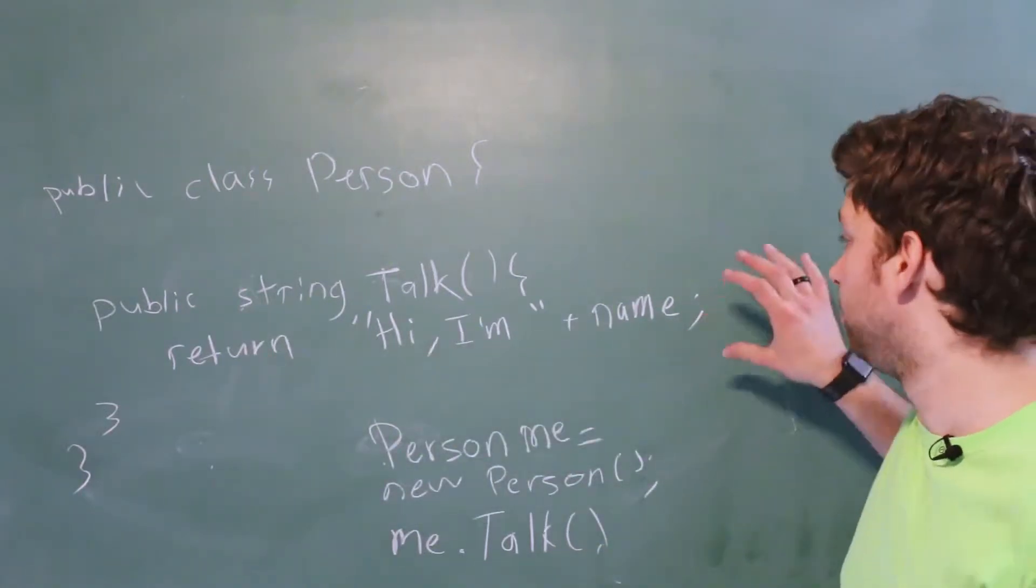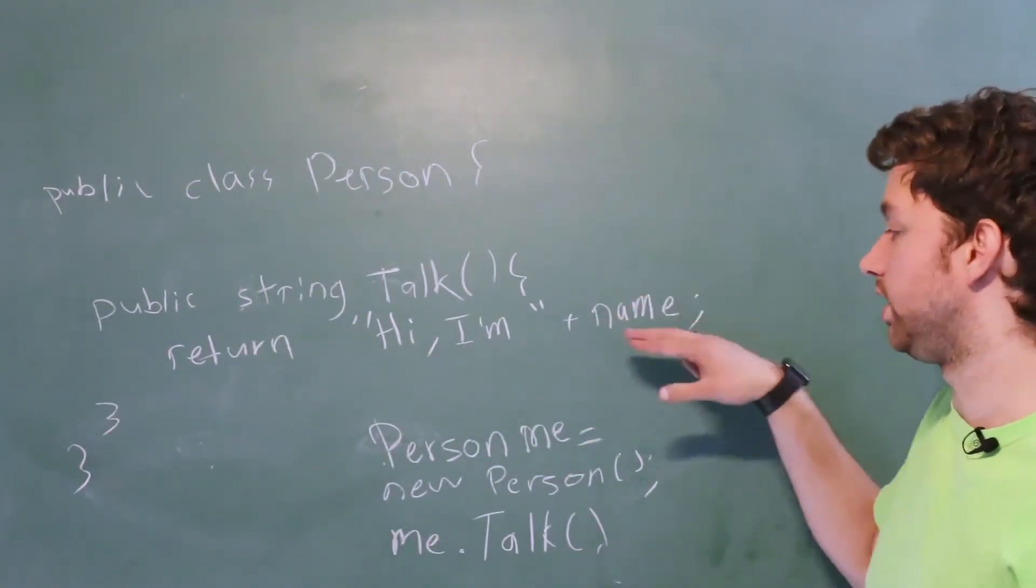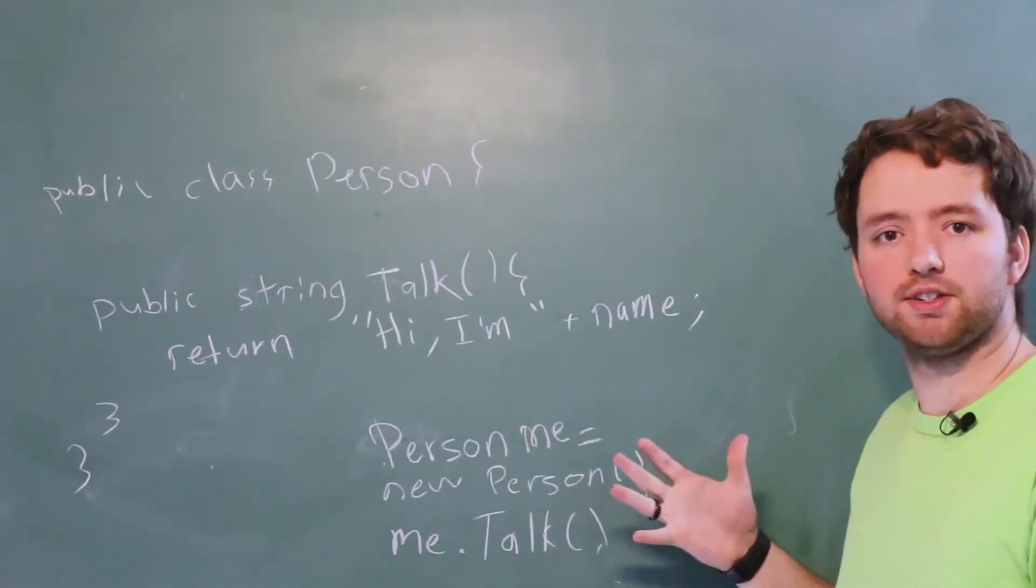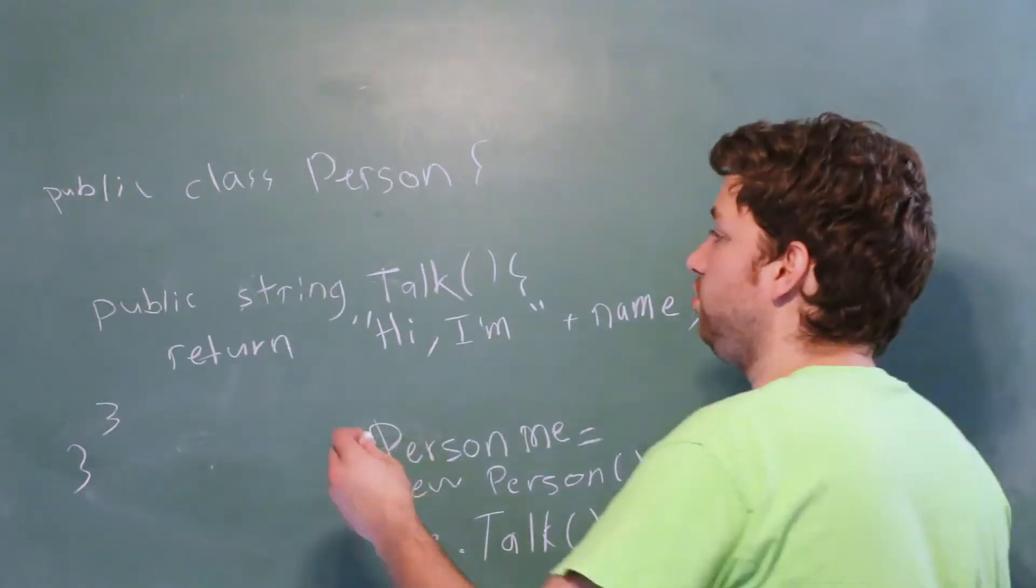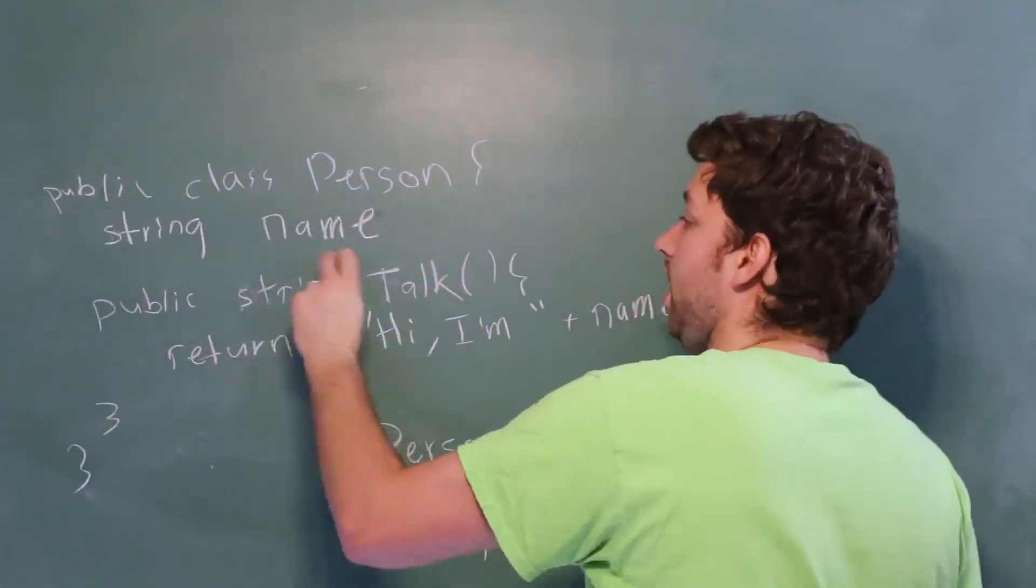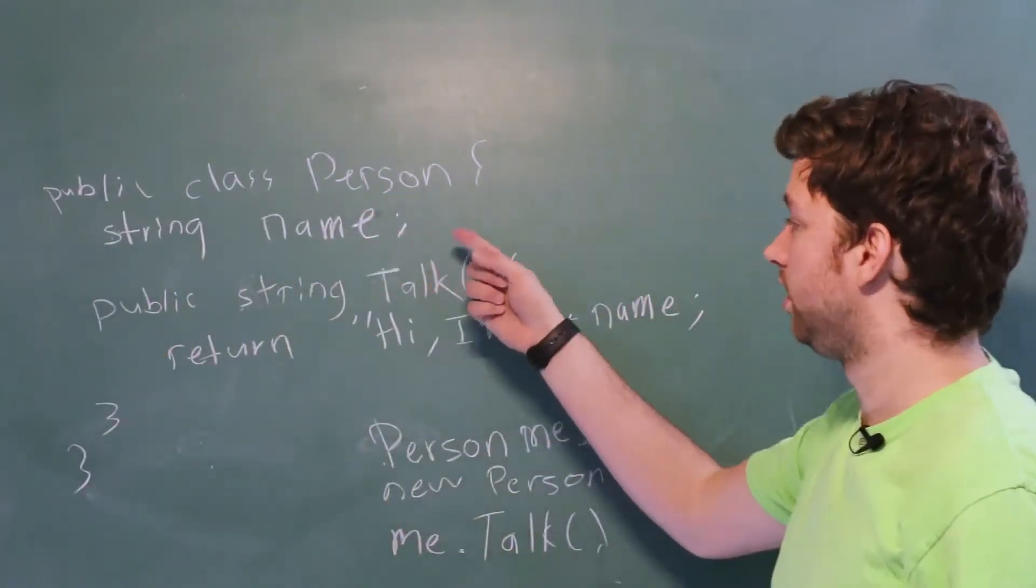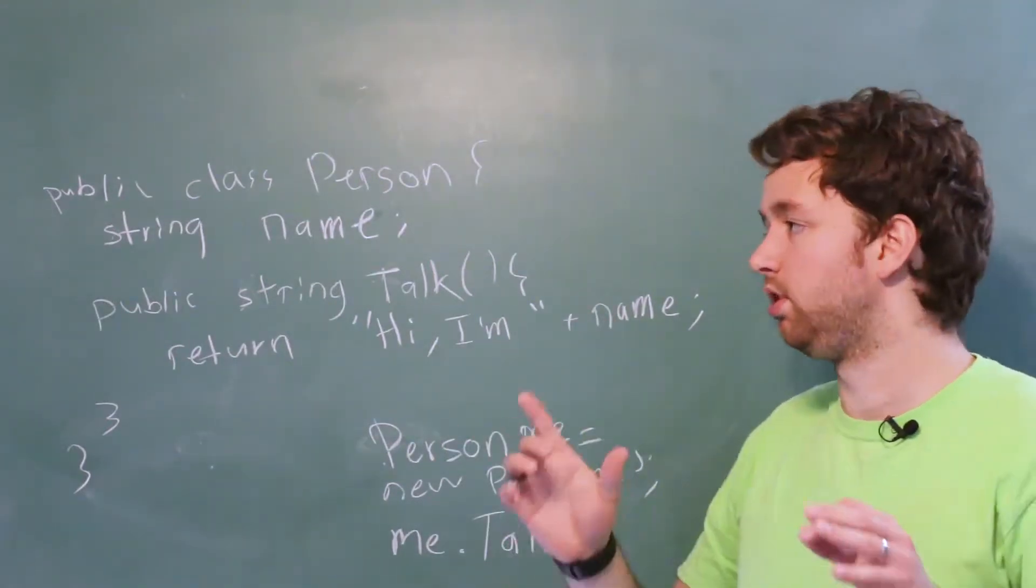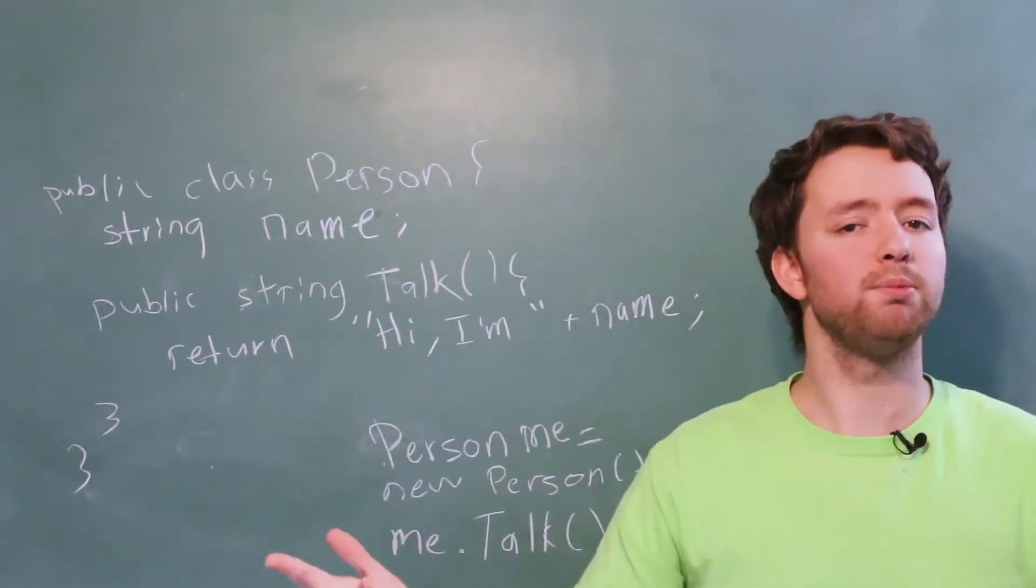Hi, I'm Caleb. But the problem is name currently doesn't have a value. Nowhere in this situation do we even have the name field and we're not assigning it a value. So what we might do is we might say string name, semicolon, and now we can print that name. But where does it get the value from? Well, this is an interesting thing. We have a couple of different options.